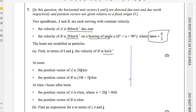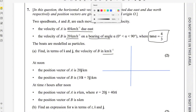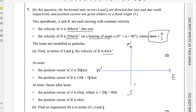Let me draw the coordinate axis here. Along the x-axis it is east, and here it is north, west and south — these are the directions. The velocity of B is 20 km/h on a bearing of angle alpha. First, draw the velocity vector making angle alpha as a bearing. Bearing is always measured clockwise from north. This is the velocity vector for B on a bearing of angle alpha.